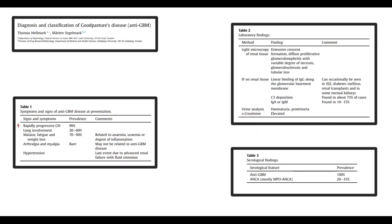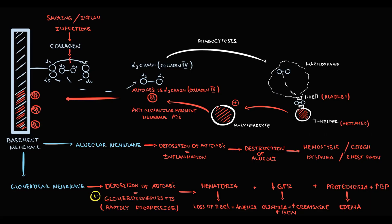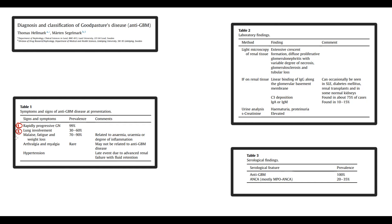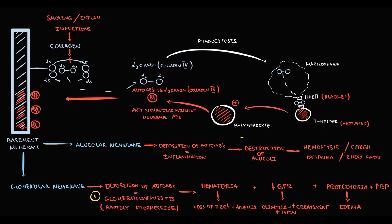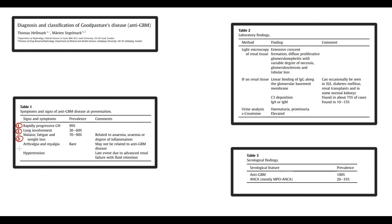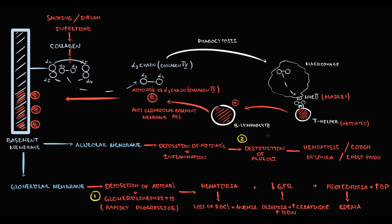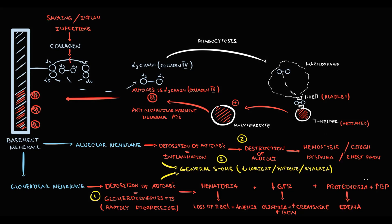The most common symptom in Goodpasture syndrome is rapidly progressive glomerulonephritis, caused by deposition of autoantibodies on the glomerular basement membrane. The second most common site of injury is the lungs, caused by deposition of autoantibodies on the alveolar basement membrane. General symptoms include malaise, fatigue, weight loss, arthralgias, and myalgia. The reason these general symptoms develop is that massive inflammation in the lungs and kidney tissue provokes release of pro-inflammatory cytokines, which cause weight loss, fatigue, and myalgia.